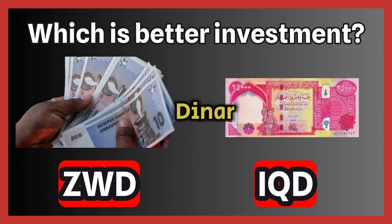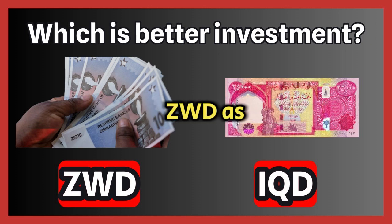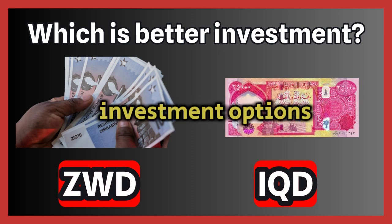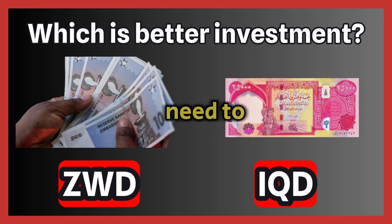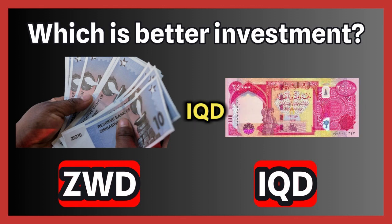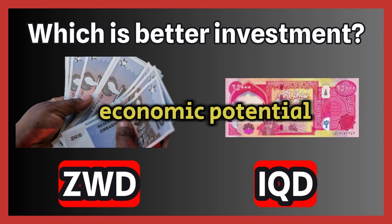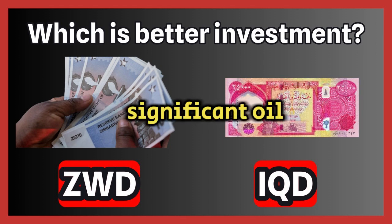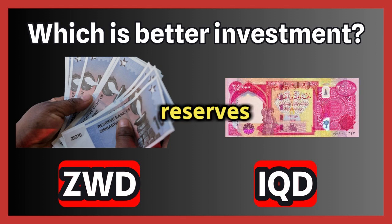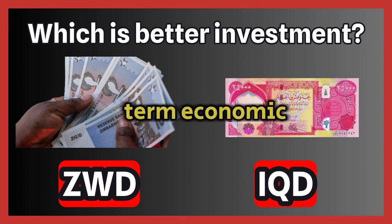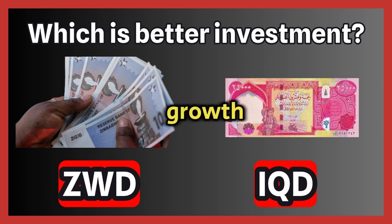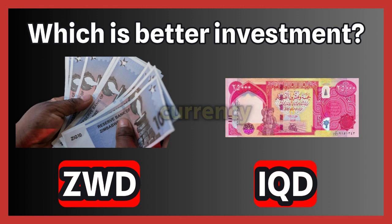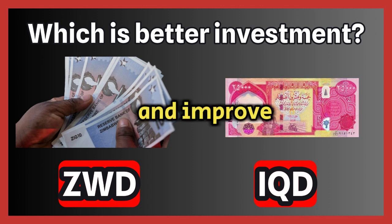When comparing the Iraqi Dinar (IQD) and the Zimbabwean Dollar (ZWD) as investment options, several factors need to be considered. Regarding the Iraqi Dinar, Iraq has significant oil reserves which could support long-term economic growth. The Central Bank of Iraq has been working to stabilize the currency and improve its value.